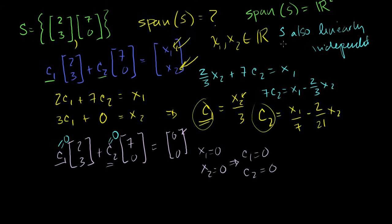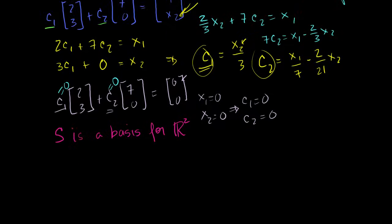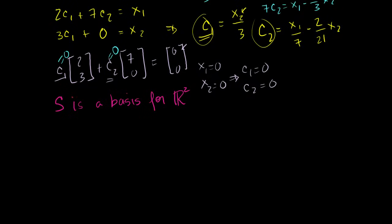Since S spans R2 and is linearly independent, we can say definitively that the set of vectors S is a basis for R2. But is this the only basis for R2? Well, I could construct a trivially simple set of vectors.